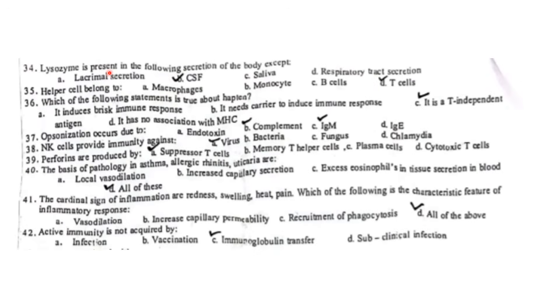Lysozyme is present in all of the following secretions of the body except cerebral spinal fluid. Helper cells belong to T cells. Which of the following statement is true about hapten? It needs a carrier to induce immune response. Opsonization occurs due to complement. IgM is also involved, but the specific answer is complement. Natural killer cells provide immunity against viruses.